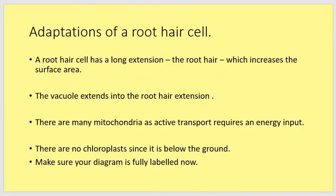First of all, adaptations of a root hair cell. A root hair cell has got a long extension that pokes out — it looks like it's another cell but it's not; it's the same cell but extended. This is the root hair part. This increases the surface area. The vacuole actually extends into the root hair extension, going all the way through the main cell and into the root hair extension.